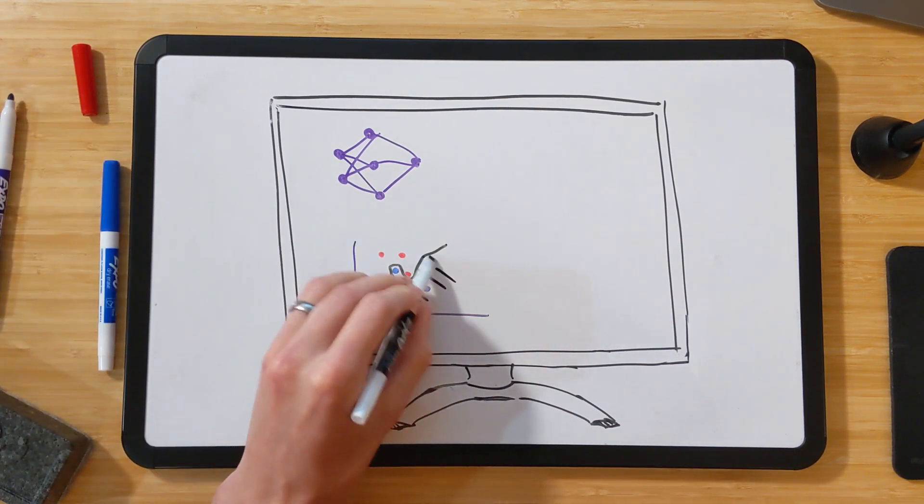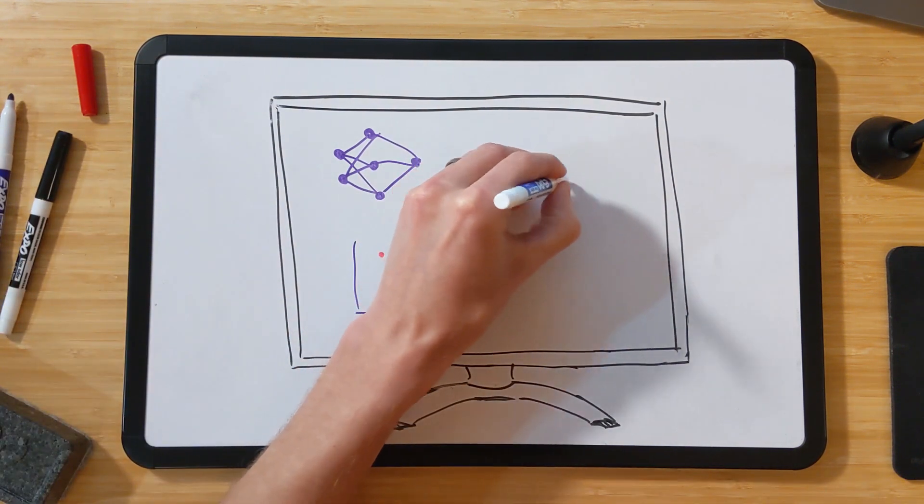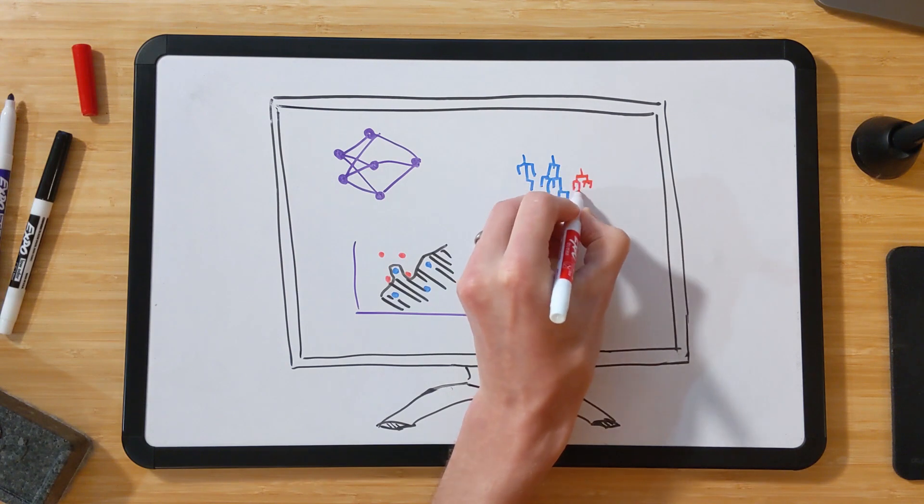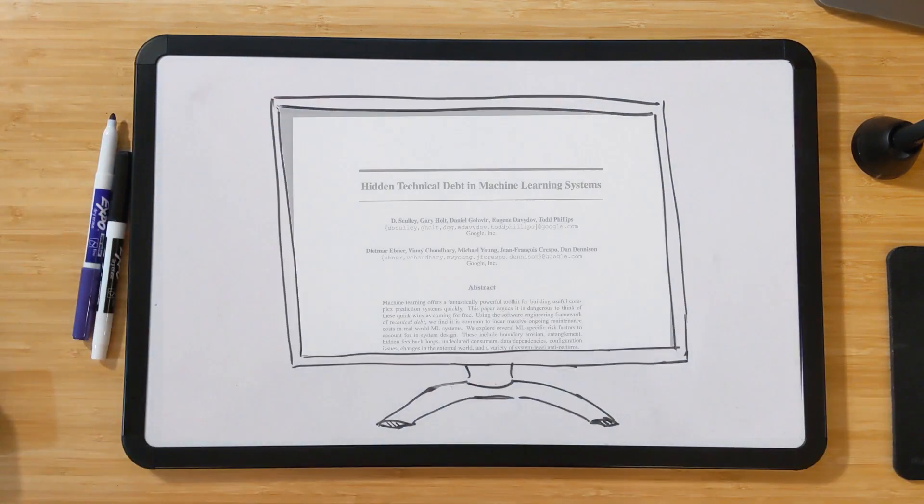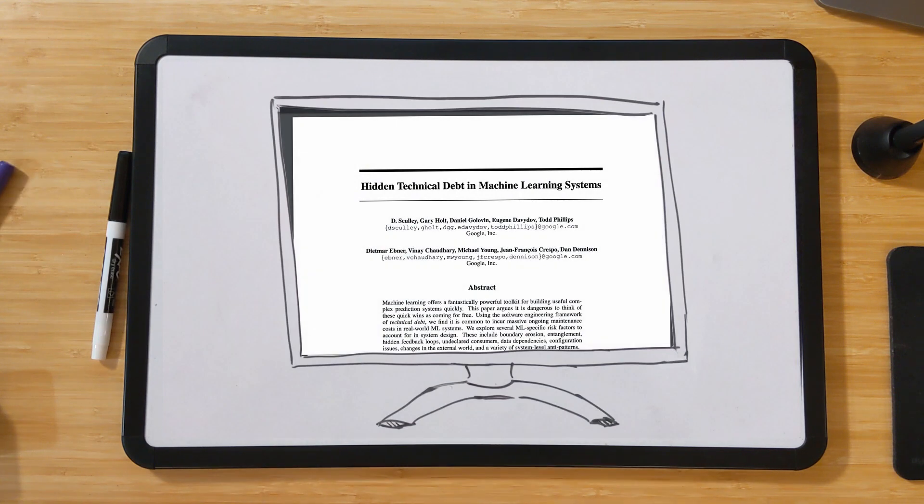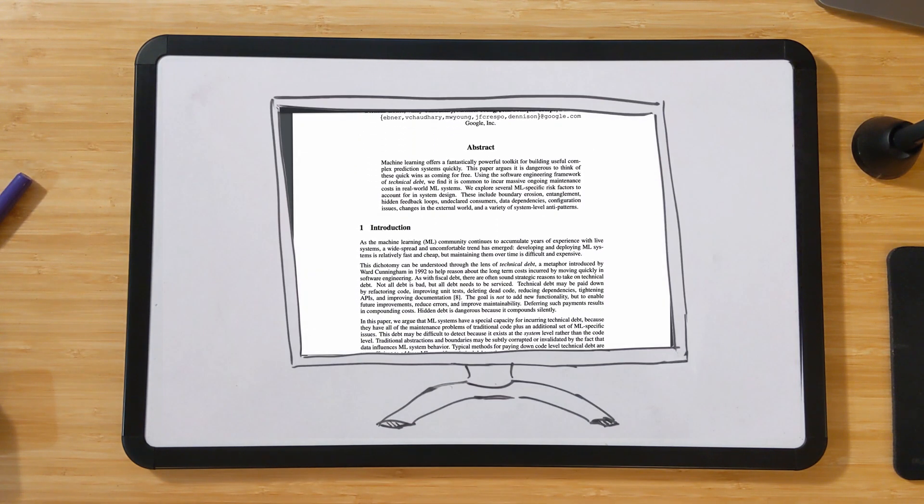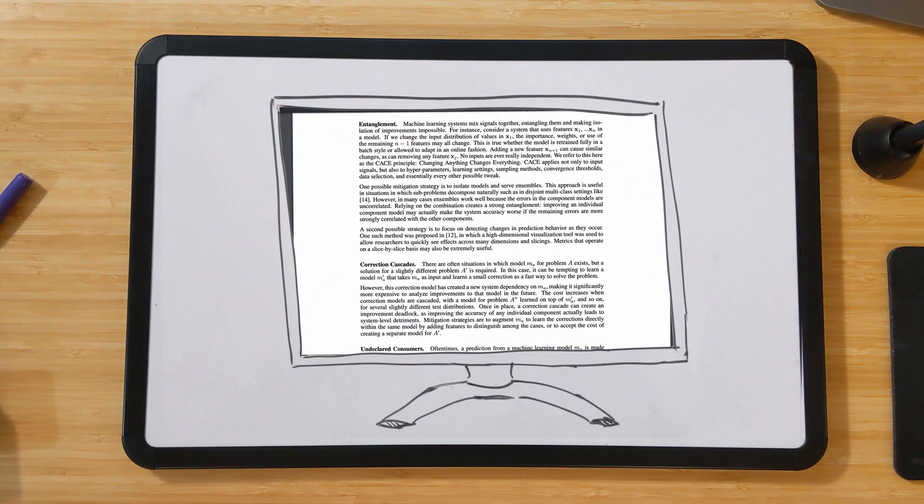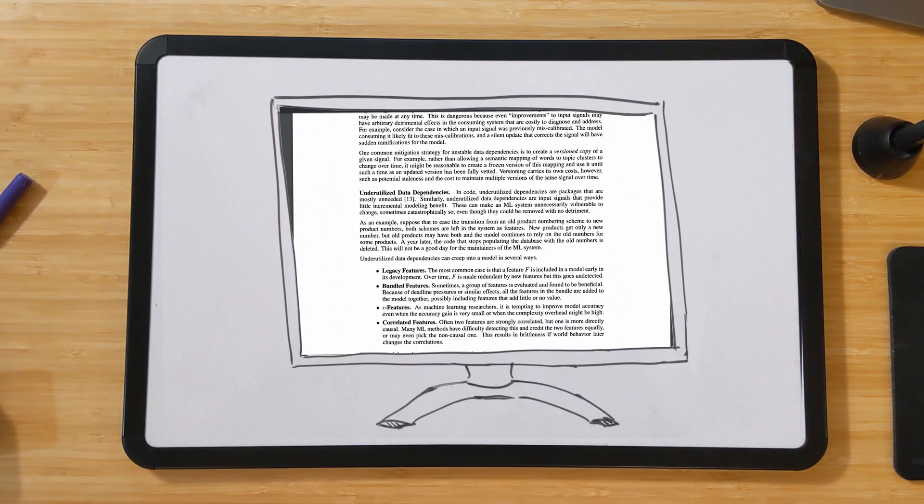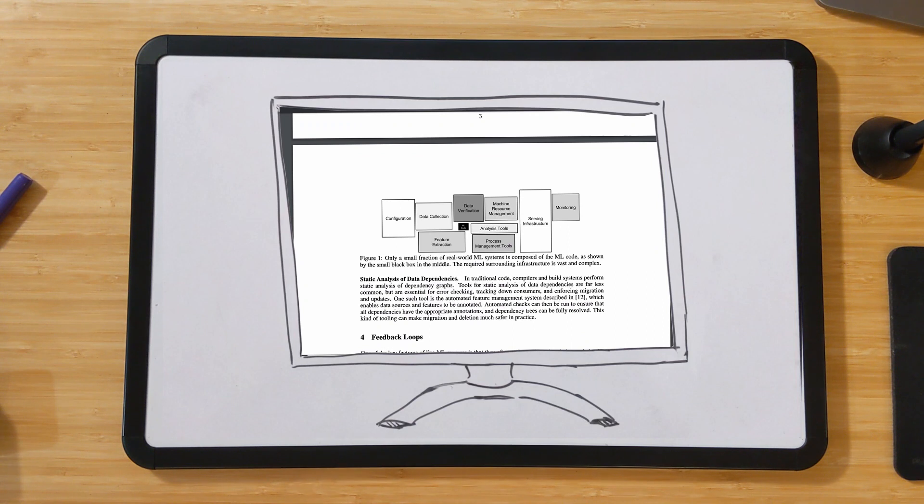Used properly, machine learning can provide compelling advantages over more traditional applications, but these advantages come at a cost. In 2015, a group of researchers from Google released a paper titled Hidden Technical Debt in Machine Learning Systems. In this video, I'll be highlighting the key points from that paper and providing some easy-to-understand examples along the way.